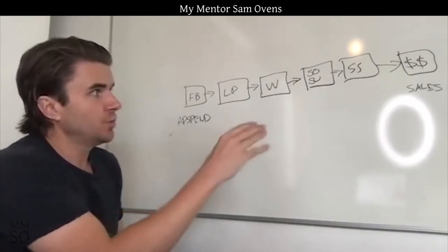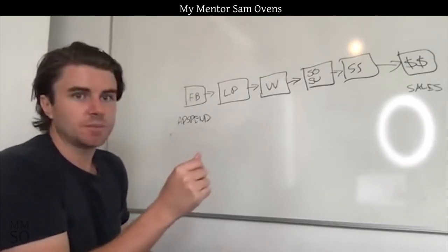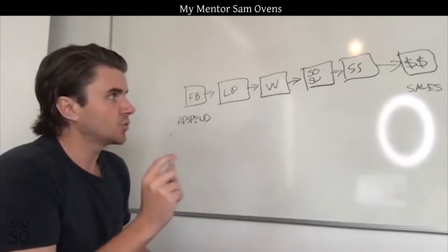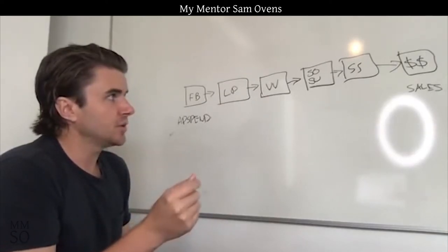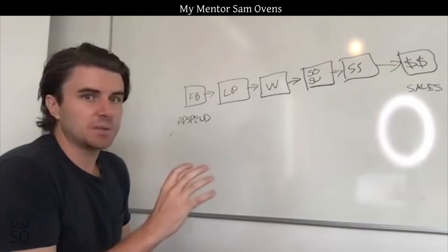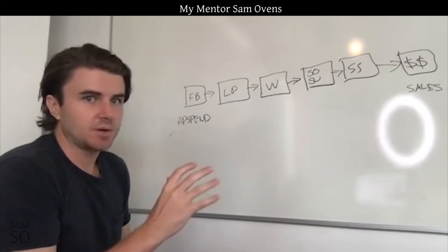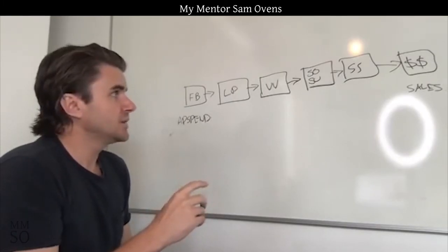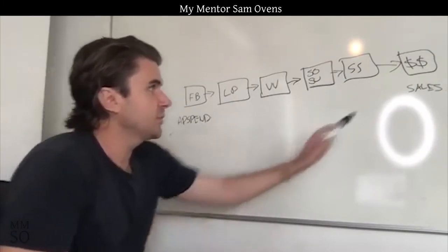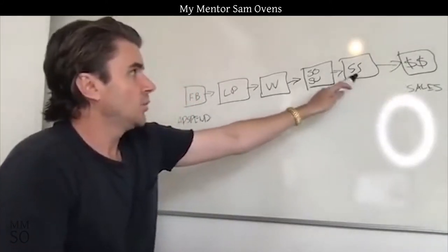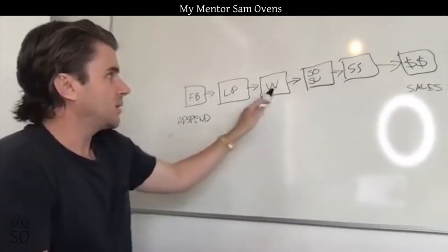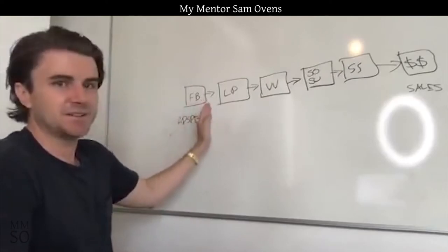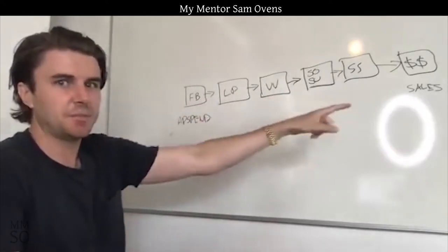So if the throughput is good, increase the volume. But if the throughput isn't good, then you need to change something. So then what I do is I start from the end and work my way backwards. You don't start from the front, you start from the back.